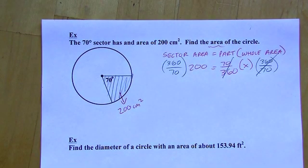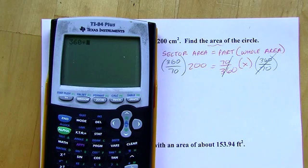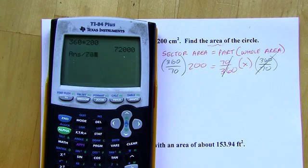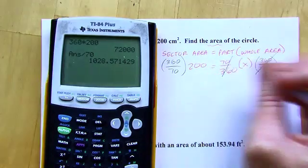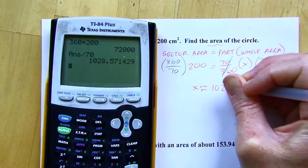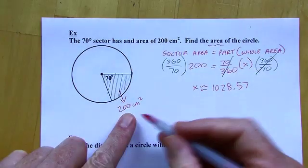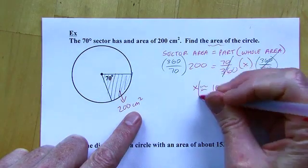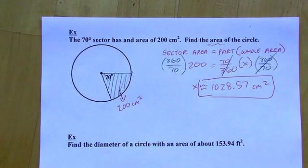So I'm just going to use my calculator here to make things quick. So I'm thinking 360 times 200. And then I'm going to divide that result by 70. And I'm going to round this to the nearest hundredth. So this is going to be 1028.57. And this is the area of the circle. So square. And I know it's going to be centimeters squared because the sector was in square centimeters. So that's approximate. But there is the approximate area of the whole circle.